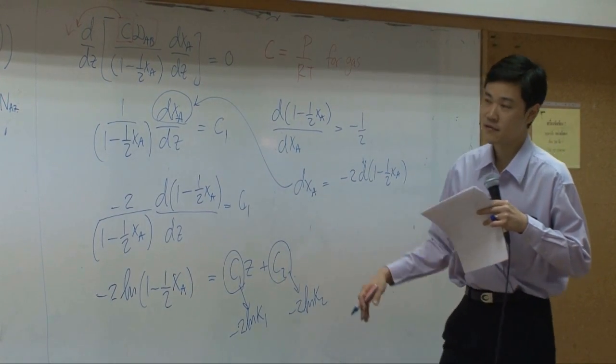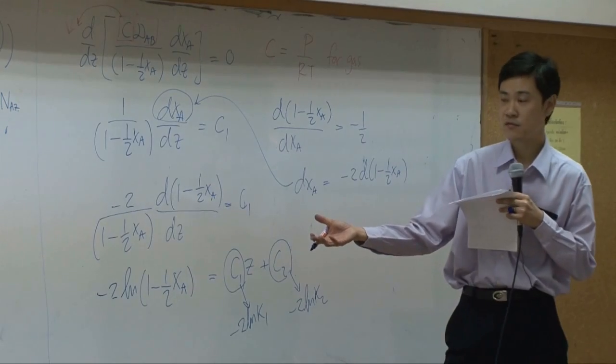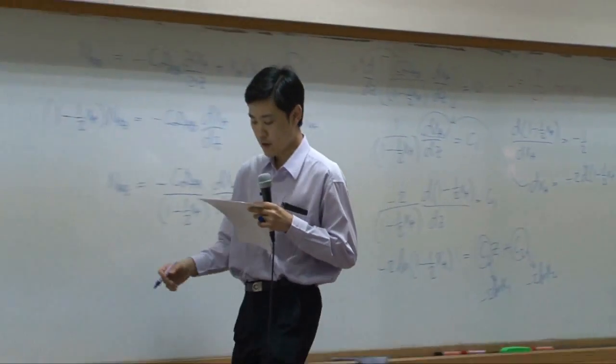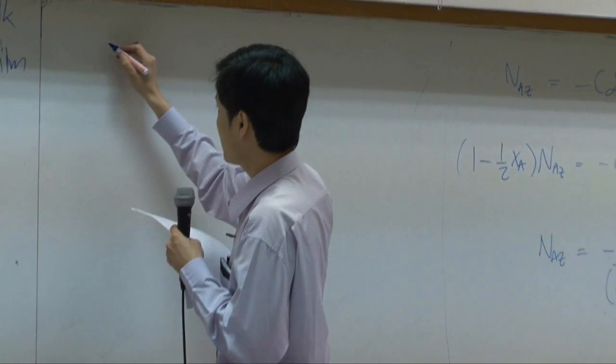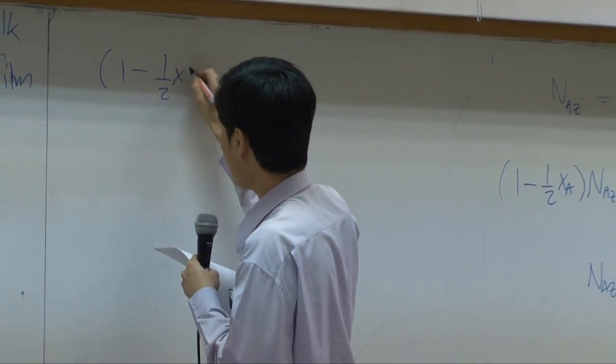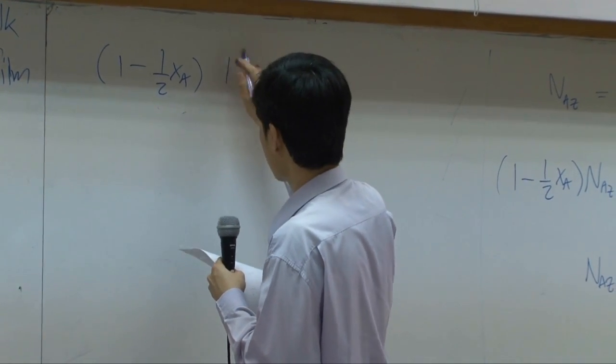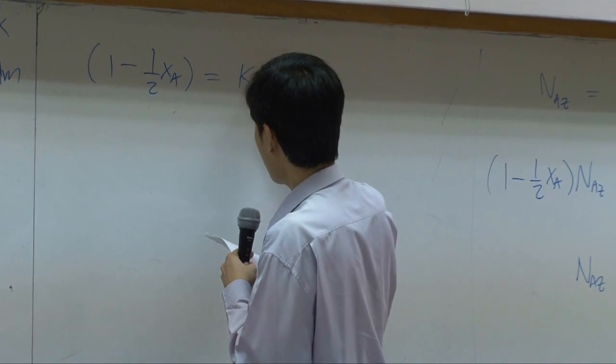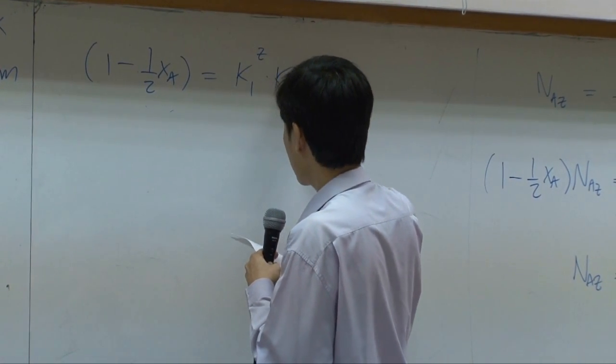From this, if you take exponential all over the place, you will get equation here to be 1 minus half XA equal to K1 power of Z times K2.